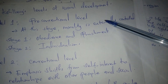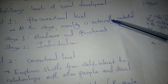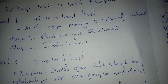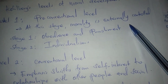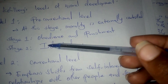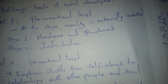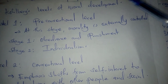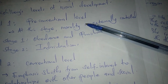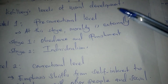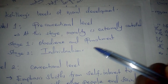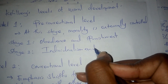At the pre-conventional stage, morality is externally controlled — it looks at values in the external environment. This level has the first two stages: stage one is obedience and punishment, whereby people obey just to avoid punishment, and stage two is individualism and exchange.